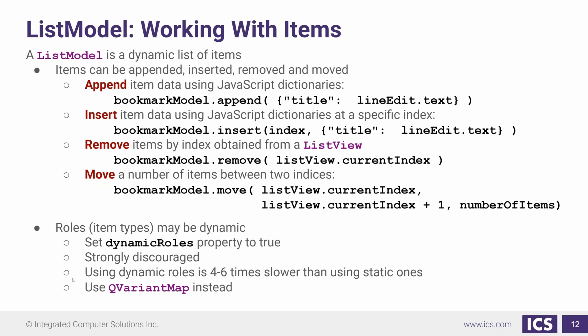We can also move items by providing where we are moving from and where we are moving to. In QML, our data comes from roles — those roles are what we saw, like name and address in our people model. We can also have dynamic roles, but this is strongly discouraged because it is much slower than using static ones. If you think you need dynamic roles, you should instead be using a QVariantMap.